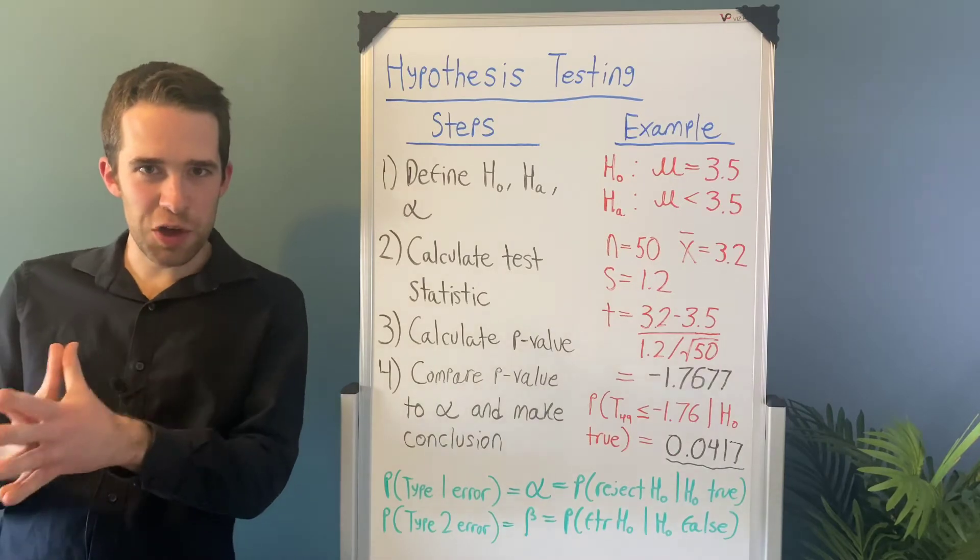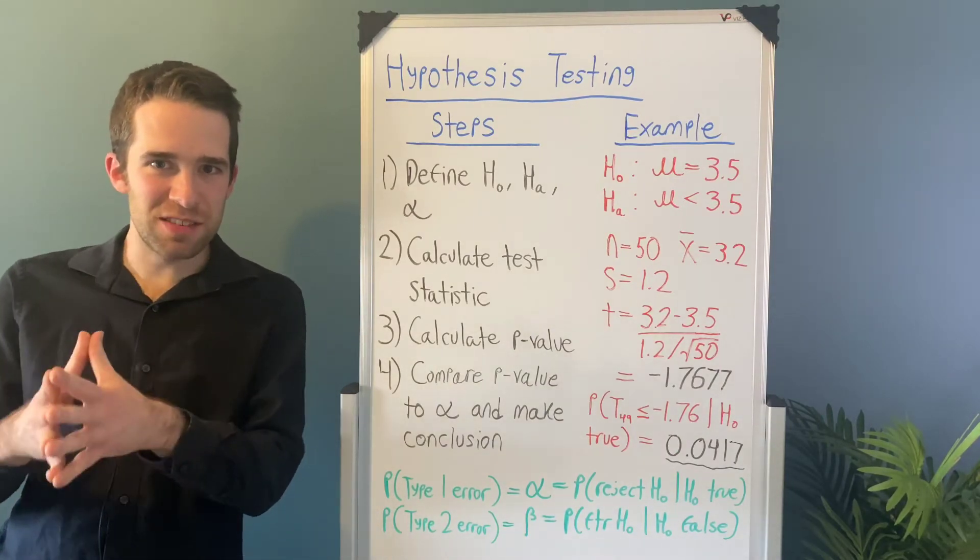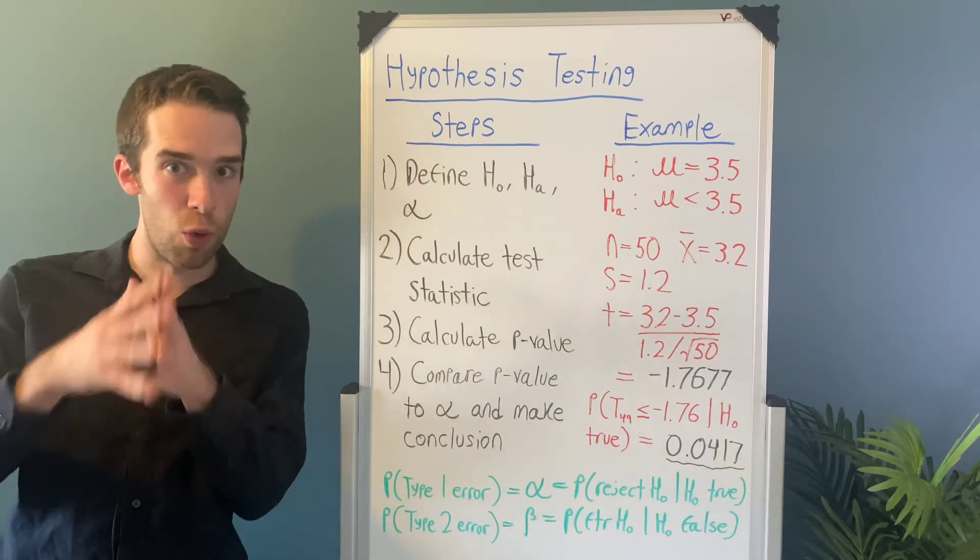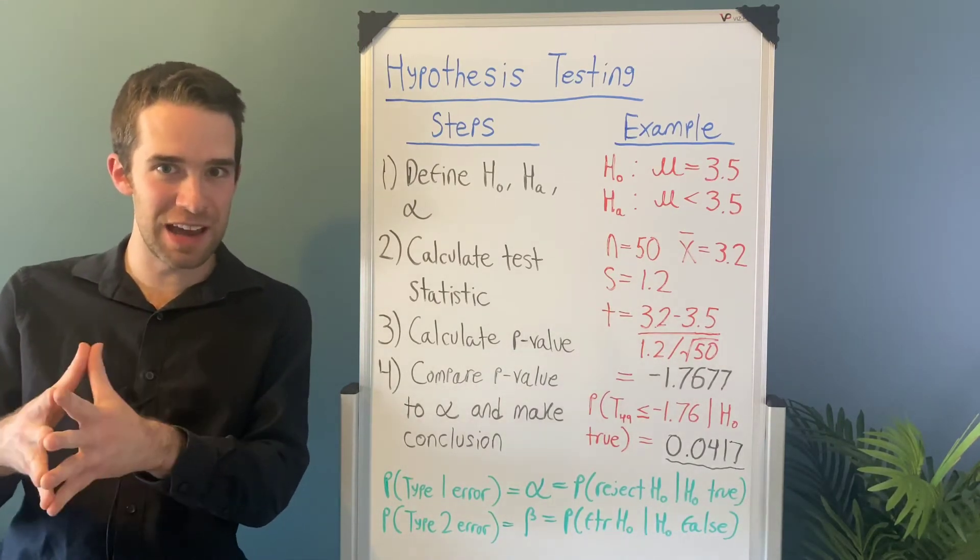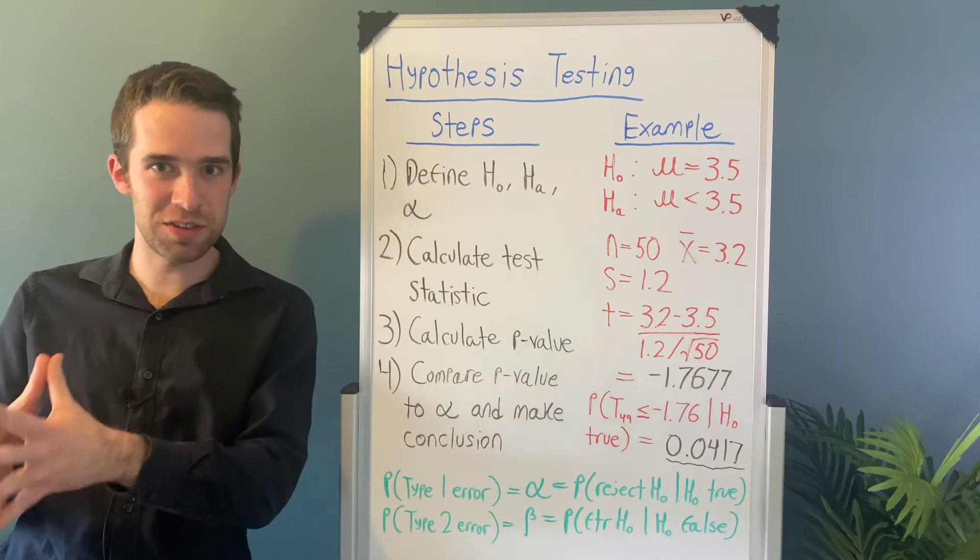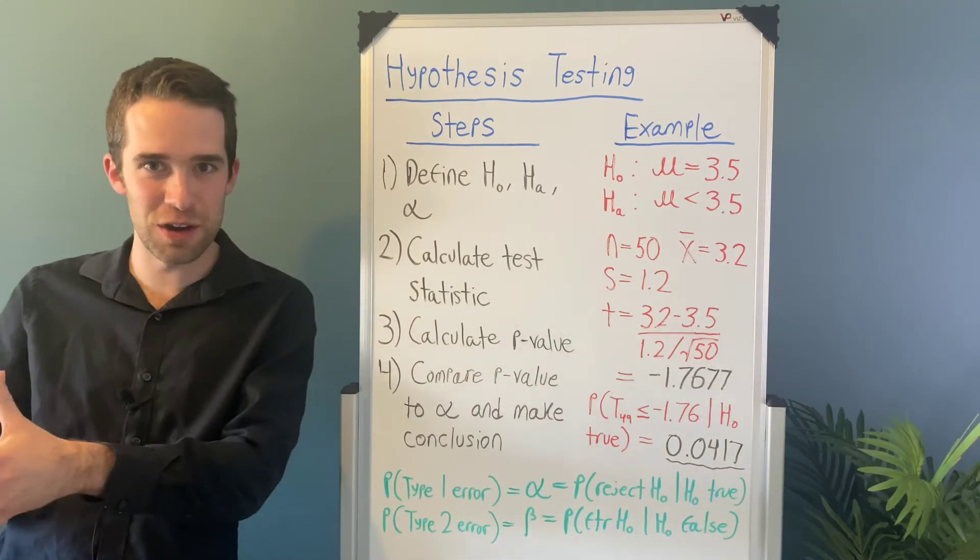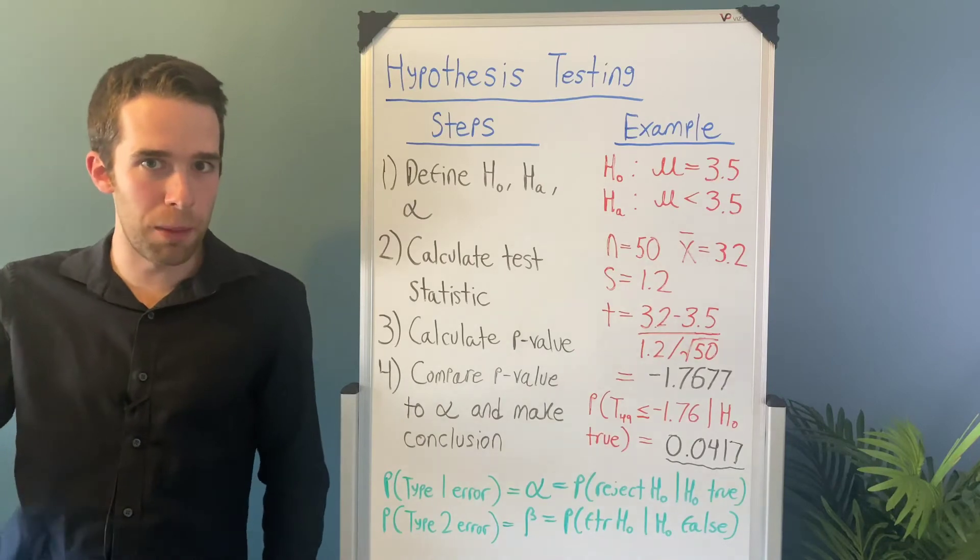Now if we want to relate that p-value into our problem, that means that the probability that we would observe a result as extreme or more extreme than we did, if in fact the null hypothesis was true, is only 0.0417. Now that's a pretty low probability.